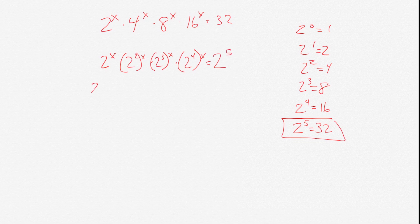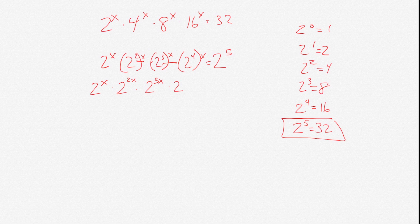An exponent that's raised to another exponent here, we have 2 squared to the x. We would multiply 2 and x. So that would then be 2 to the 2x. 2 cubed to the x would be 2 to the 3x. 2 to the 4th to the x is then 2 to 4x. And all of that equals 2 to the 5th.